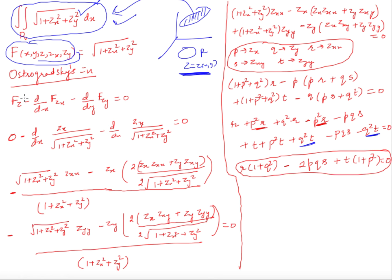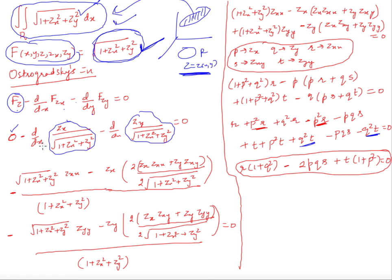Applying Ostrogradsky's equation: ∂F/∂z - d/dx(F_{z_x}) - d/dy(F_{z_y}) = 0. The partial derivative of F with respect to z is 0 since there is no explicit z. Then -d/dx of [z_x / sqrt(1 + z_x² + z_y²)] minus d/dy of [z_y / sqrt(1 + z_x² + z_y²)]. Using the notation p = z_x, q = z_y, r = z_xx, s = z_xy, t = z_yy, after differentiation and simplification you reach the result.